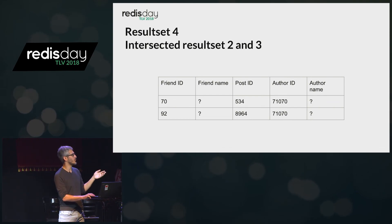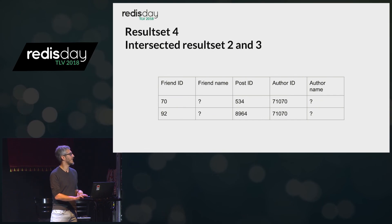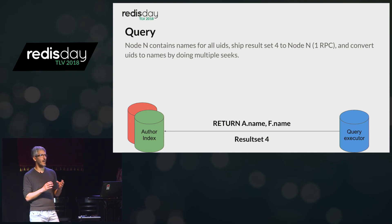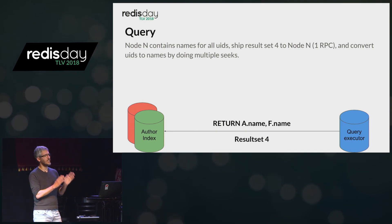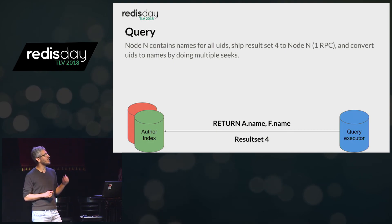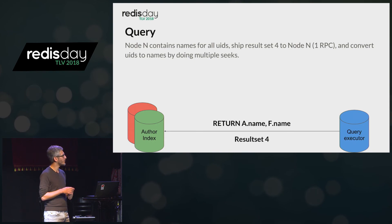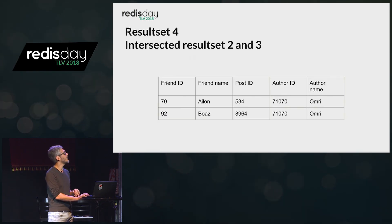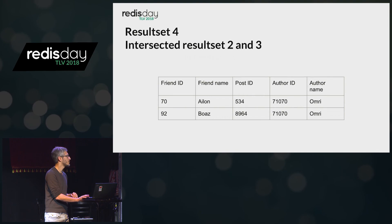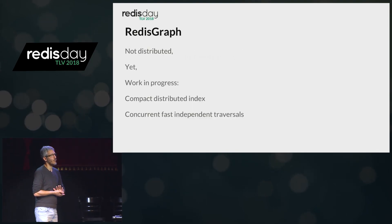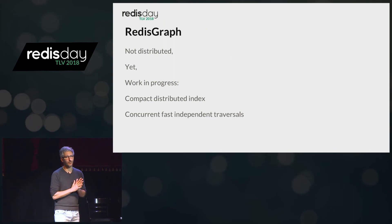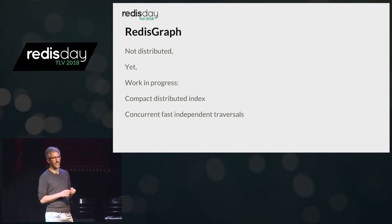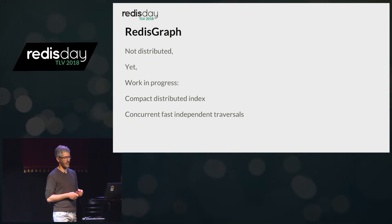The result set is still missing node attributes — in this case, node names. The node attributes were divided not by type but stored on one server regardless of node type. We give it the result set and ask it to fill in the name for each ID, giving us the final result. Going back to Redis Graph: as of today, Redis Graph is not distributed just yet. Work is underway on a compact distributed index which will be queryable extremely fast.